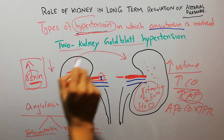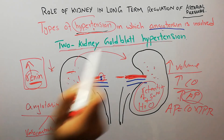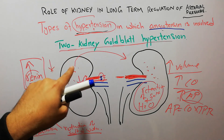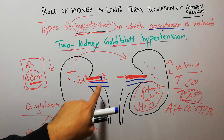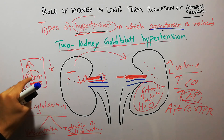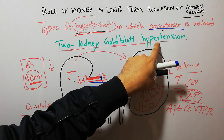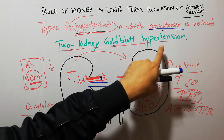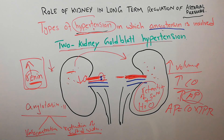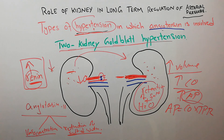Both kidneys are contributing to two-kidney Goldblatt hypertension, but for different reasons. The clamped kidney contributes because decreased blood flow leads to renin secretion. The normal kidney contributes because of the renin secreted by the affected kidney. That's all about two-kidney Goldblatt hypertension.